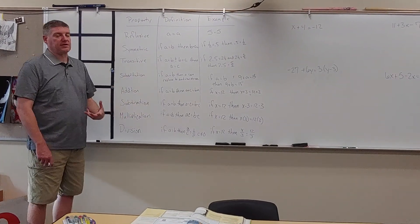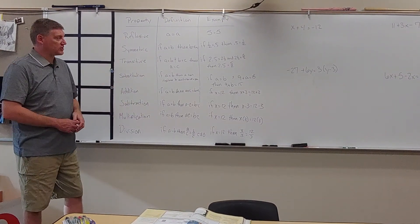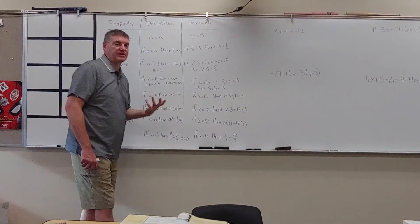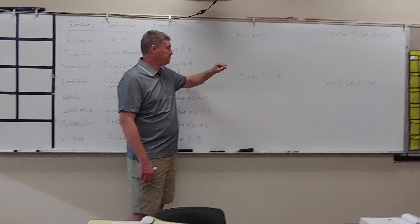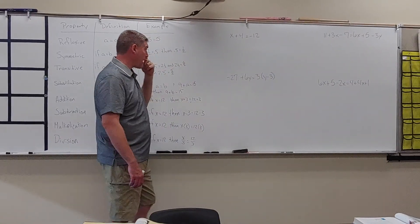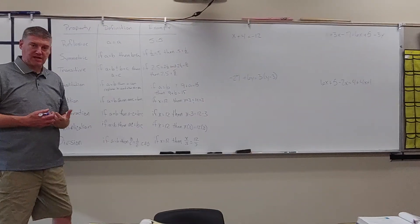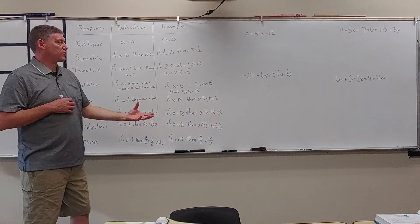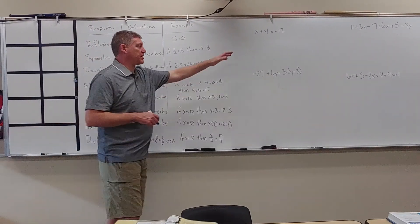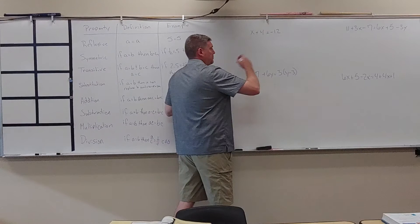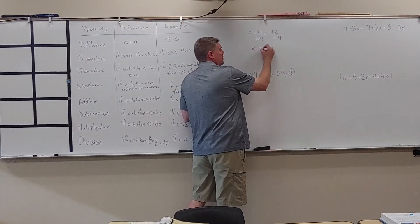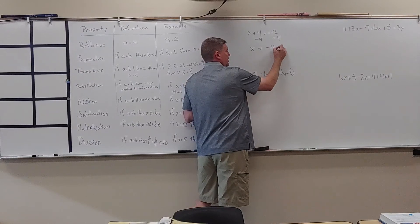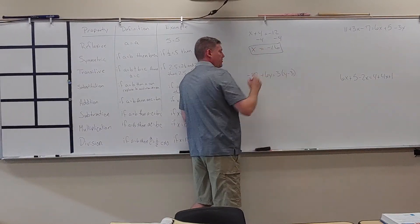We're going to use these properties to solve equations. The first one we're going to do is a nice, straightforward, one-step problem. I have X plus 4 equals negative 12. I'm going to isolate my variable. I'm going to bring this 4 to the other side by doing the opposite. I'm going to subtract 4 from both sides, which gives me X equals negative 16.